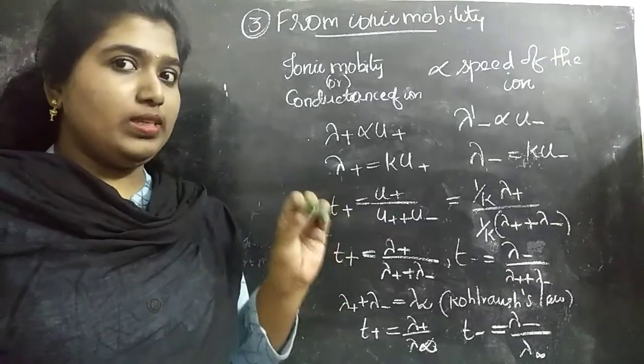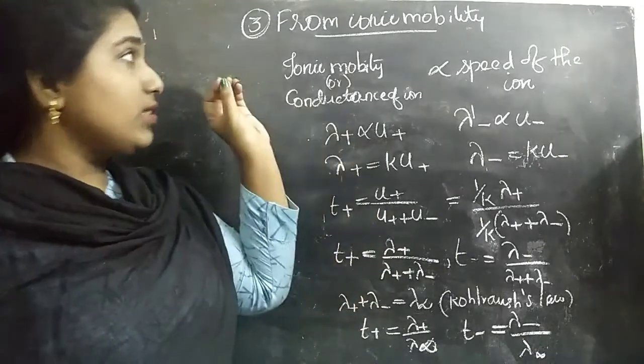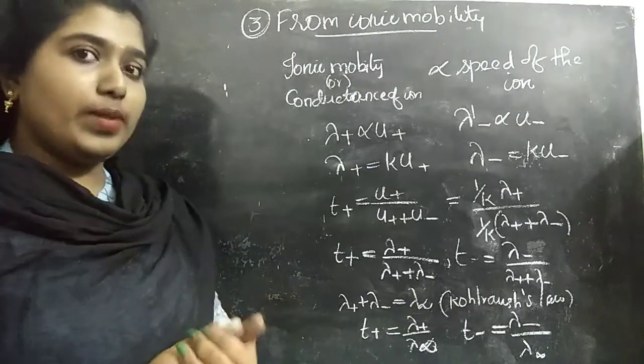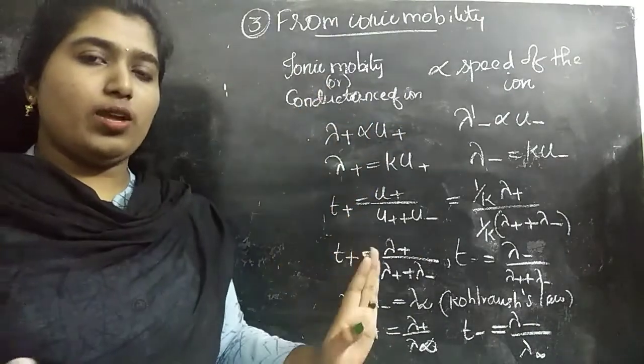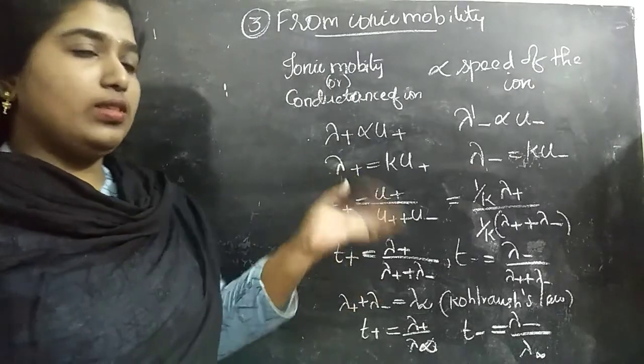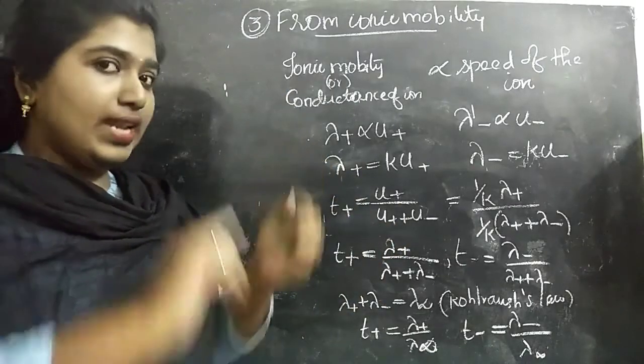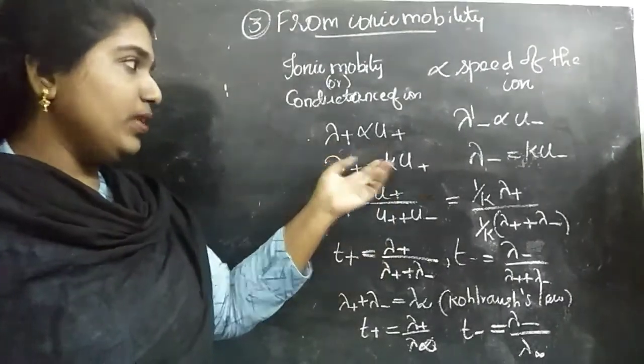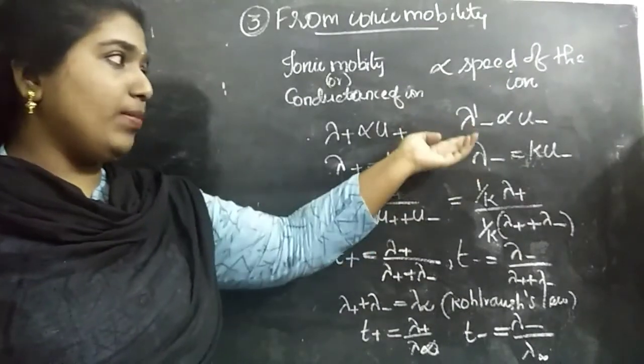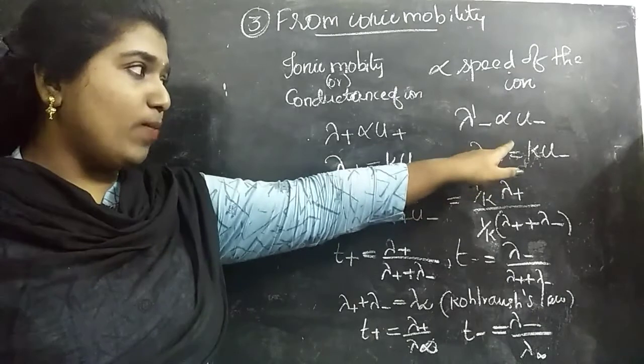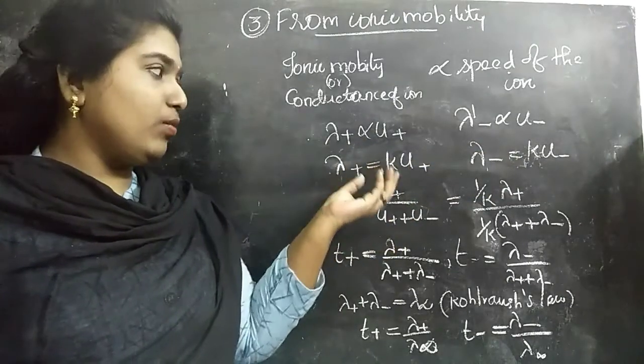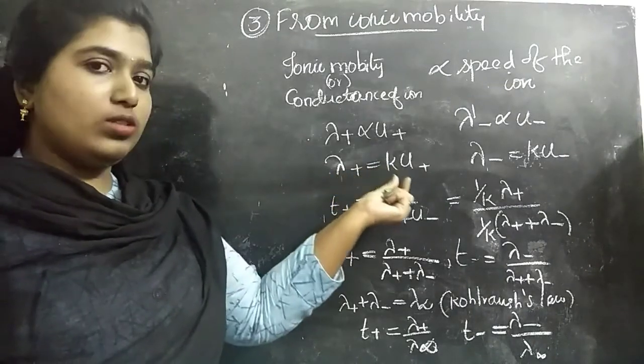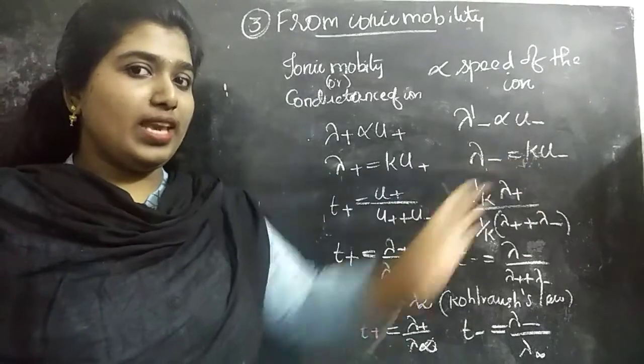The last method we are going to discuss for determining the transport number is from ionic mobility. The ionic mobility or the conductance of a particular ion will be proportional to speed of the ion. This is the principle for this method. The conductance is given by lambda. For a cation lambda+, it is proportional to the speed of that ion U+. For the conductance of an anion, lambda- is proportional to the speed of that ion U-. To remove the proportionality, we introduce a constant called proportionality constant K. That is lambda+ equals K into U+ and lambda- equals K into U-.